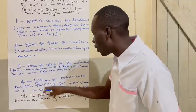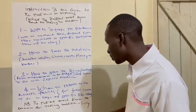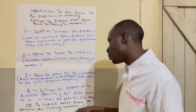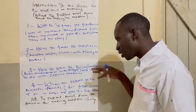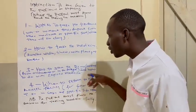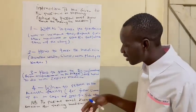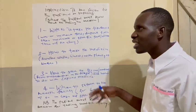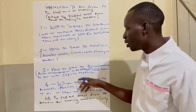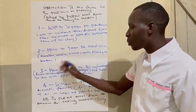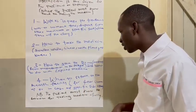Information number four: when to return to the health facility, for a final checkup or in case of specific side effects. You will tell them: if you get side effects like severe headache, dizziness, and other severe ones, you have to come back to the facility. Or for those who are diabetic or have hypertension, you come back for a review to see how your condition is.